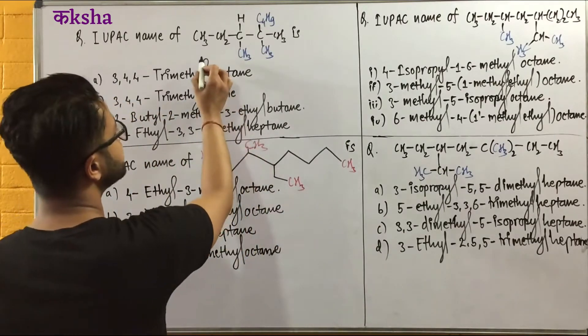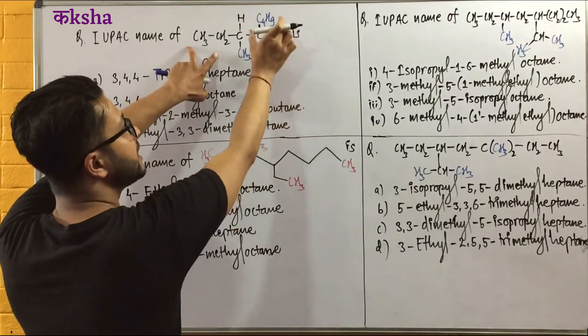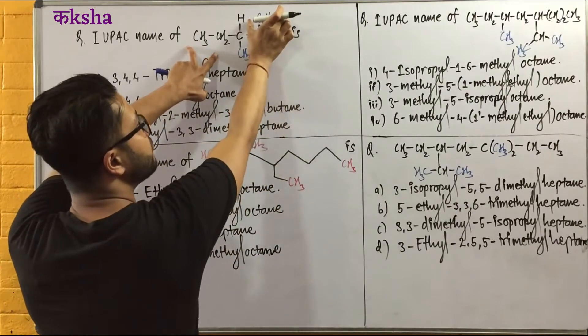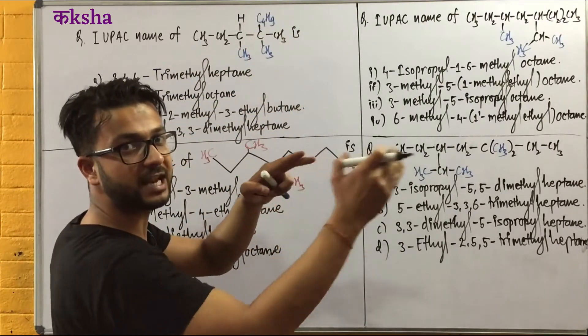Longest and continuous carbon chain selection. What do we need to do next for C4S9? We need to do the extension.